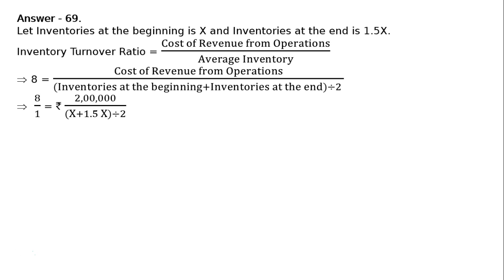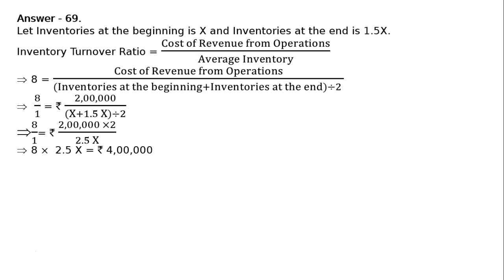This implies that 8 equals cost of revenue from operations, given as Rs. 2 lakhs, divided by opening inventory x plus closing inventory 1.5x, whole divided by 2. Taking the division by 2 to the numerator for multiplication, that is Rs. 2 lakh multiplied by 2, whole divided by 2.5x. Cross-multiplying: 8 into 2.5x equals Rs. 4 lakh.